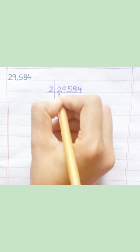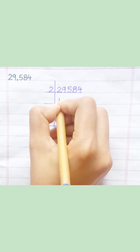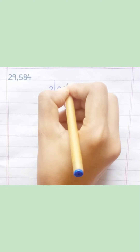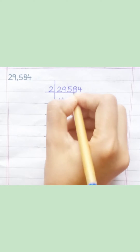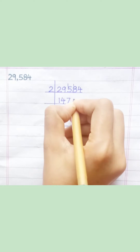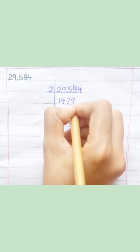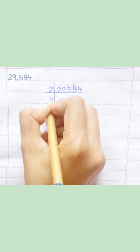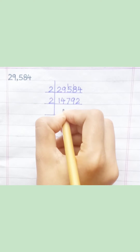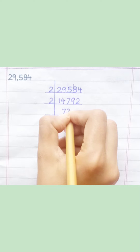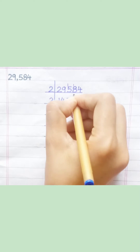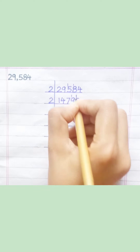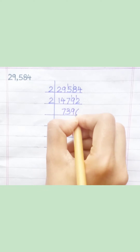2 1s are 2. 2 4s are 8. 2 7s are 14. 2 9s are 18. 2 2s are 4. 2 3s are 6. 2 9s are 18. 2 6s are 12.